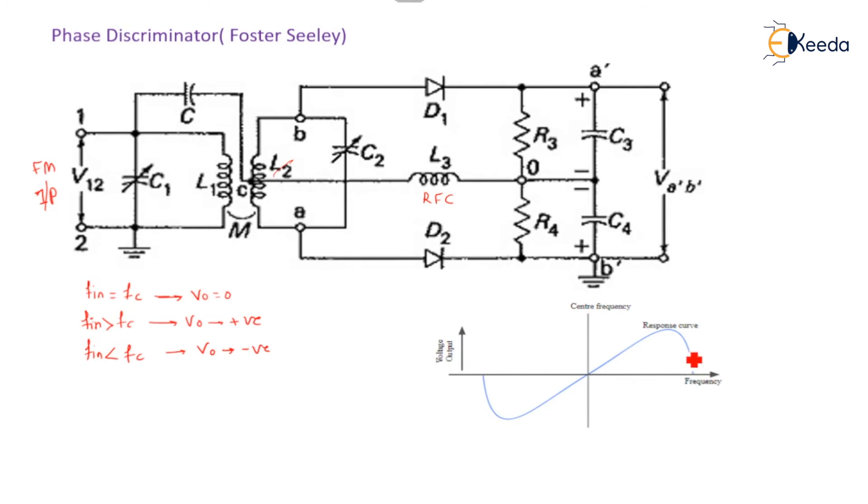Here we can learn the operation with the help of the diagram. First case, when F_in equal to F_c, that time exact distribution of that voltage, the upper half and lower half voltages are same. Hence, output voltage will be 0.